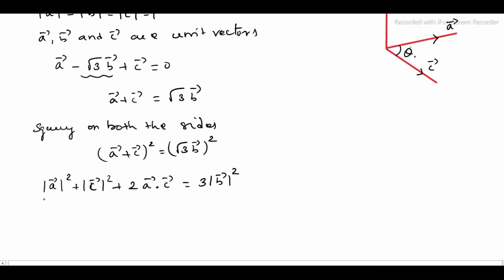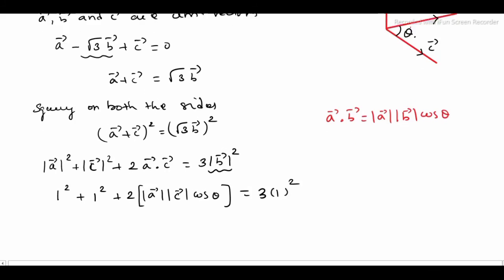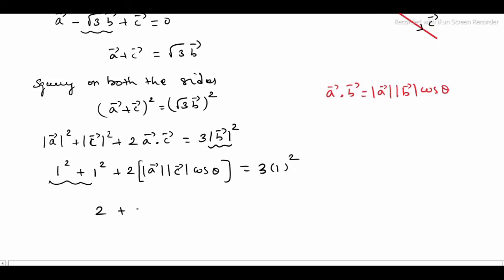The modulus of A vector is 1, so 1 squared; modulus of C vector is 1, so 1 squared; plus 2 into A vector dot C vector. Using the identity, A vector dot C vector equals modulus of A vector times modulus of C vector times cos theta. Modulus of B vector is 1, so the right side is 3 times 1 squared, which is 3. So we get 1 plus 1 plus 2 cos theta equals 3.